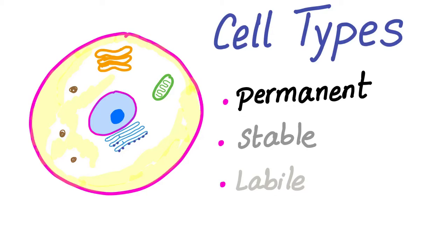We have explained the cell cycle in a previous video. Today we'll talk about the different types of cells. They can be permanent, stable, or labile cells. This is Medicosis Perfectionalis and let's keep rolling.